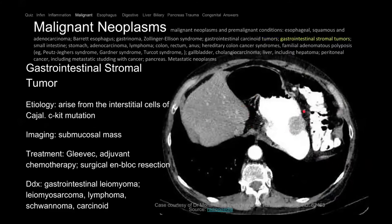Small bowel carcinoid is a type of neuroendocrine tumor. They release serotonin that goes into the portal hepatic system and causes carcinoid syndrome — diarrhea and flushing. Here's a well-distended stomach with a soft tissue mass hanging off the stomach wall — this is how gastrointestinal stromal tumors (GIST) look. GIST is a tumor that arises from the submucosa with a C-kit mutation, which is important because you can target it with imatinib (Gleevec), which blocks tyrosine kinase. It shrinks the tumor and can then be resected.